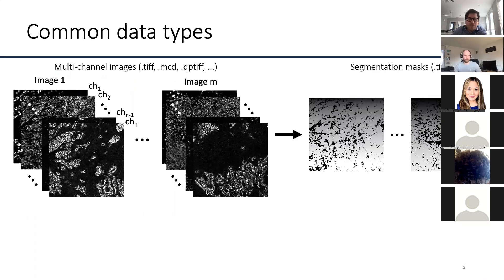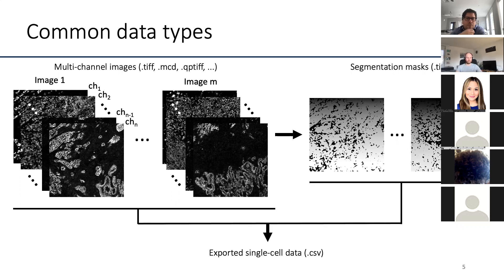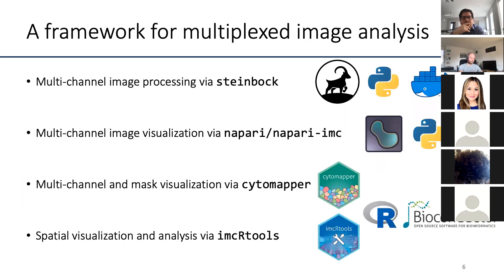One of the first image processing steps is segmentation — finding objects in these images, most commonly individual cells. By combining multi-channel images and segmentation masks, we export single-cell data such as mean intensity per marker and per cell, morphological features, and interaction graphs. The framework I want to talk about goes from raw data down to spatial data analysis: the first part is Python-based for image processing and visualization, and the second part is R-based for spatial data analysis.